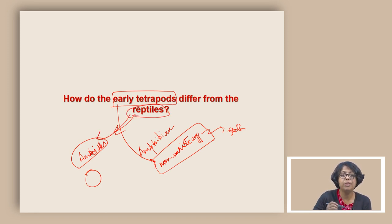This is the main difference that the early tetrapods are basically non-amniotes and the reptiles are amniotes. Therefore you can distinguish an early tetrapod or amphibian by their non-amniotic egg from a reptile which has an amniotic egg with shells.